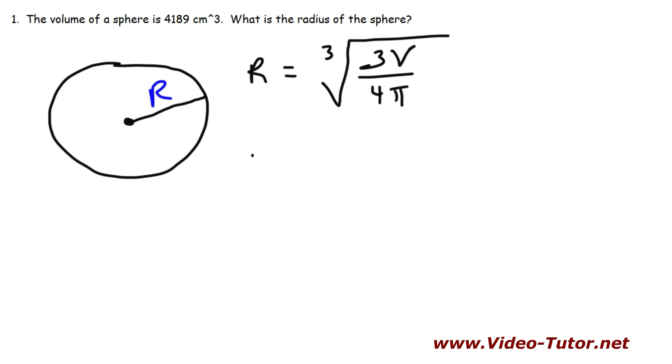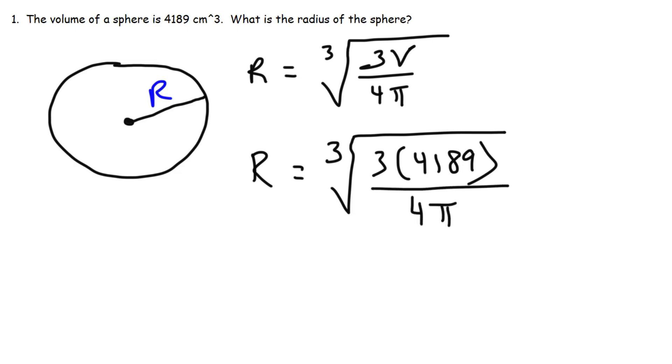Now, let's go ahead and plug in everything into the equation. So this is going to be 3 times 4189 divided by 4 pi. And I'm going to use the exact value of pi in the calculator.